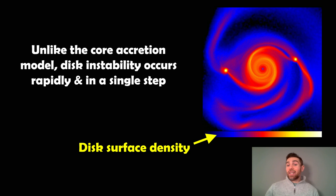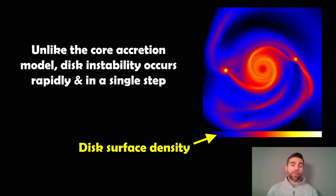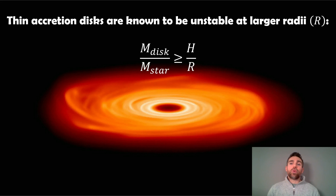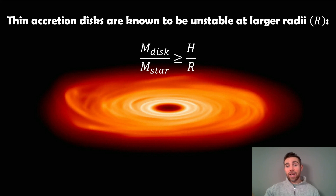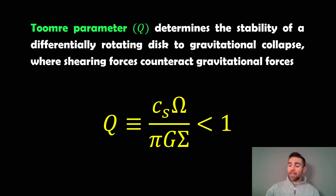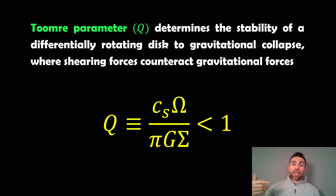Unlike the core accretion model, the instability occurs rapidly in a single step. Accretion disks are known to be unstable at large radii — further away from the star. If you've got a massive disk that is very thin, it's going to be unstable further out. The Toomre parameter Q is the criteria for the stability of a differentially rotating disk through gravitational collapse. For a Keplerian disk, the orbital velocity decreases with distance from the star, like how planets further out in the solar system orbit more slowly.